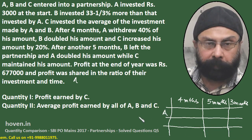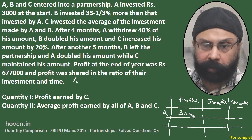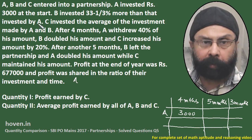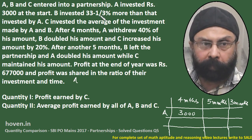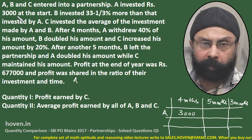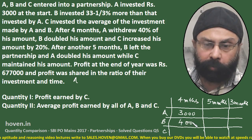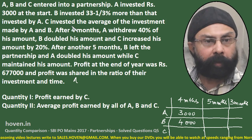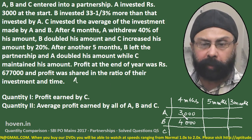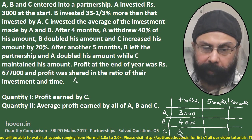Let us see what was the total investment by each of the partners. For partner A, partner A invested Rs. 3000 at the start. B invested 33 and 1/3 percent more than that invested by A. 33 and 1/3 percent means one third more than A. One third of 3000 is 1000, so B invested 1000 more than 3000, which is 4000. And C invested the average of investment by A and B. The average of 4000 and 3000 is half of 7000, that is 3500.